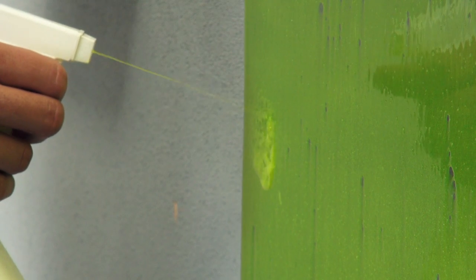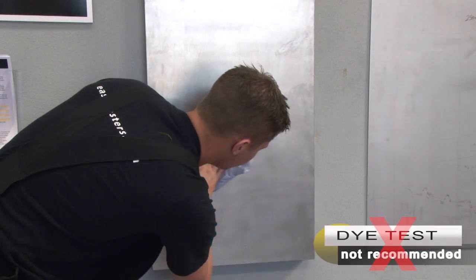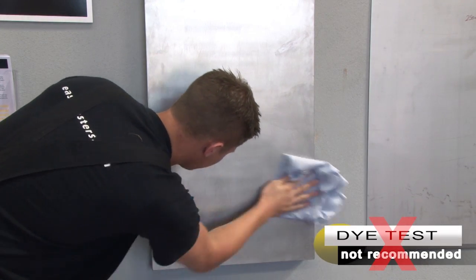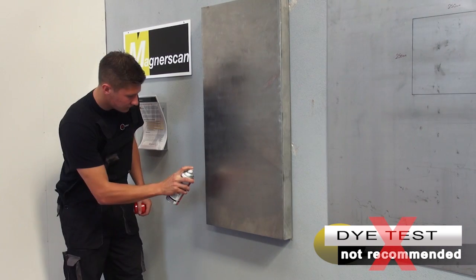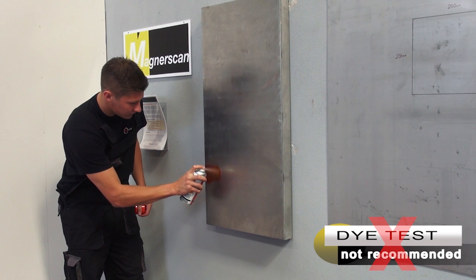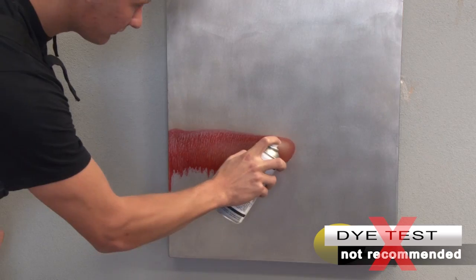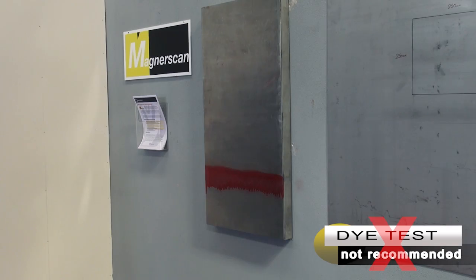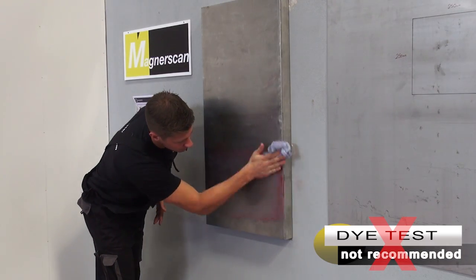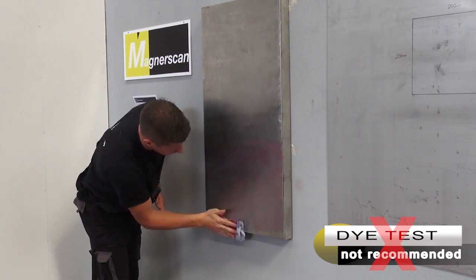The traditional method for testing vessels is dye testing. However, this method has many limitations and inconsistencies as we are going to demonstrate. The first method requires the vessel to be thoroughly cleaned, the dye applied using a spray gun, waiting for approximately one hour, then the washing off of dye. The theory is that the dye will remain in the cracks.